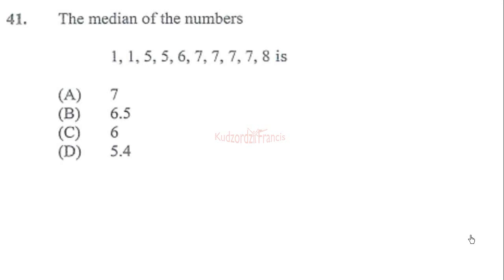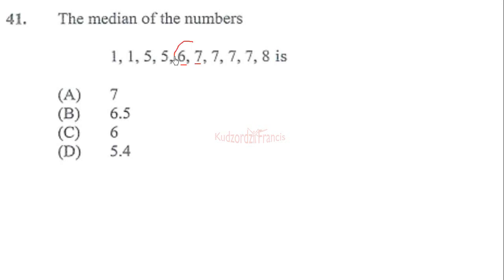Question 41 from the May 2018 paper: we have the median of the numbers. The median is the middle number after rearranging in ascending or descending order. We have ten numbers, so we get two numbers in the middle. Cross out one, two, three, four from each end, and find the average of the two middle values. The median equals six plus seven over two.